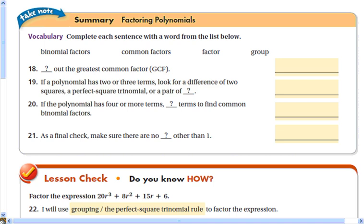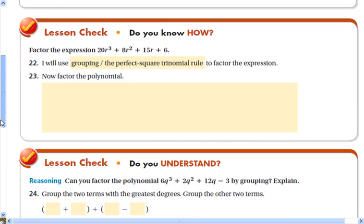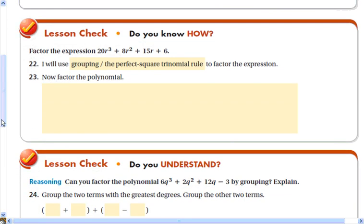Summary. Let me just label these here. You can pause here and try and figure these out first if you like. And the lesson check: factor the expression 20r³ + 8r² + 15r + 6. To do this, I will use grouping because there's four terms so you can't use the perfect square trinomial rule. Go ahead and try that.